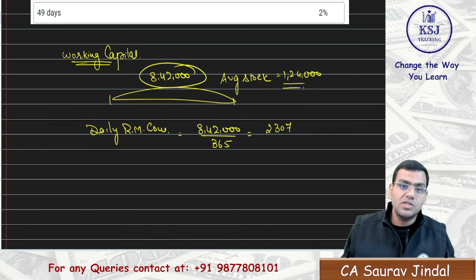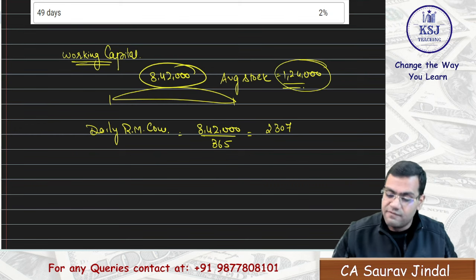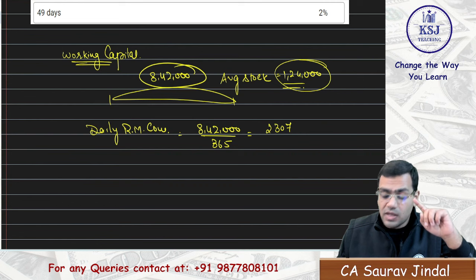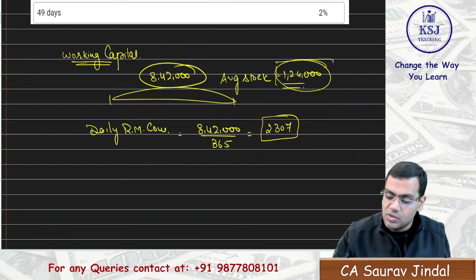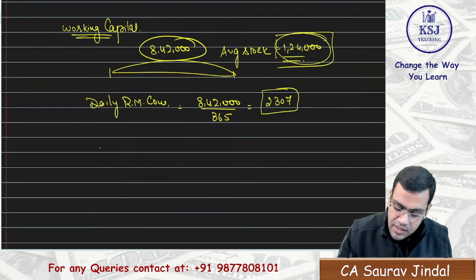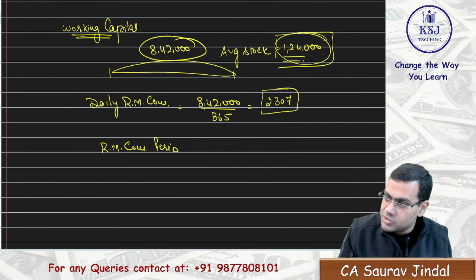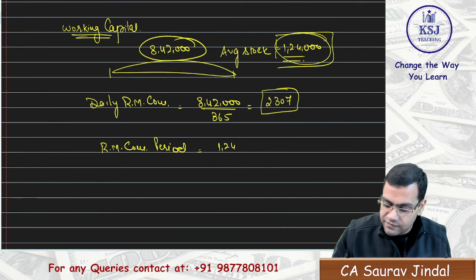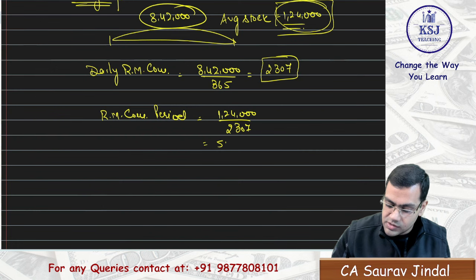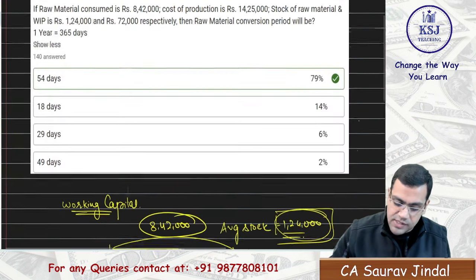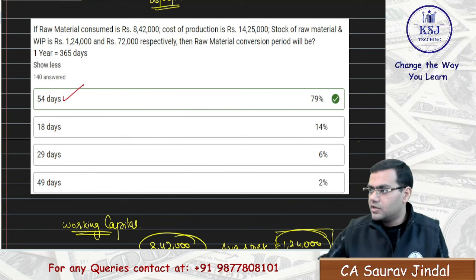Daily raw material consumption is ₹2,307, and on average you have ₹1,24,000 as the stock. So if you are consuming ₹2,307 worth of stock every day, in how many days will you consume ₹1,24,000? That is the raw material consumption period. So: ₹1,24,000 divided by ₹2,307 comes to 54 days. So that was the correct answer — 54 days.